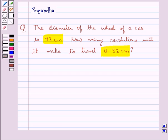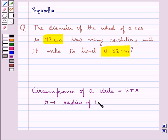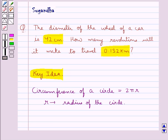Before proceeding on to the solution, let's recall the formula to find the circumference of a circle. This is equal to 2 pi r where r is the radius of the circle. This is the key idea to be used in this question.